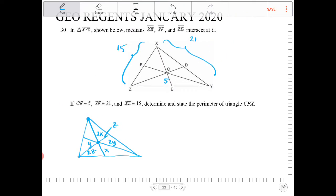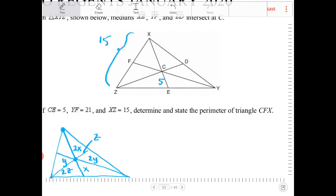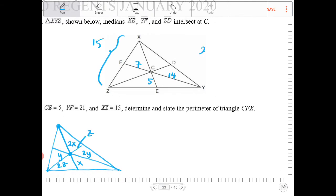All right, so now knowing this fact, if YF is 21, then what would that make FC and CY? Well, that would have to be 7 and 14. How did I do that so quickly? Because 21, let's say FC plus CY. And let's call FC X, and CY let's call that 2X. Because 2X plus 1X is equal to 21, X must equal to 7.